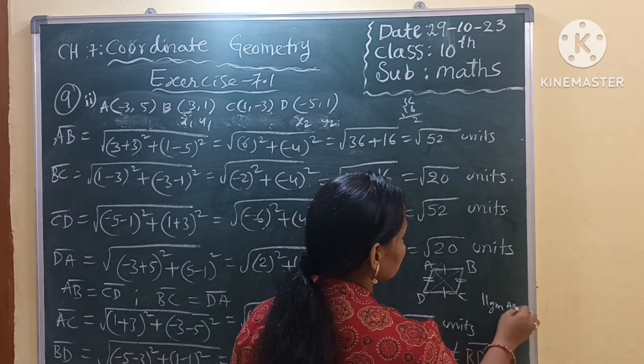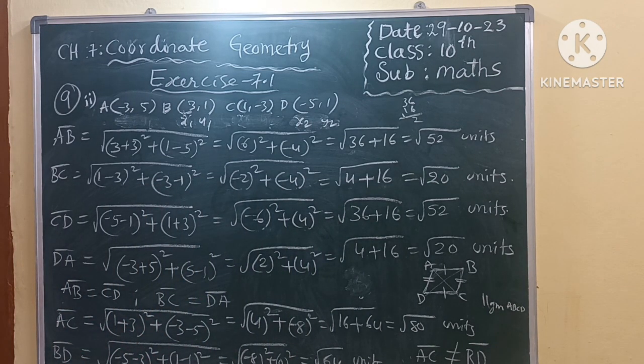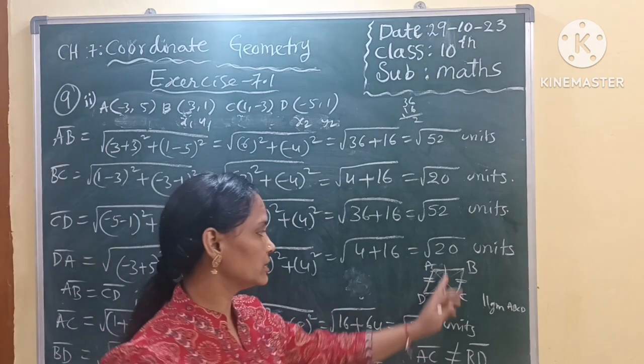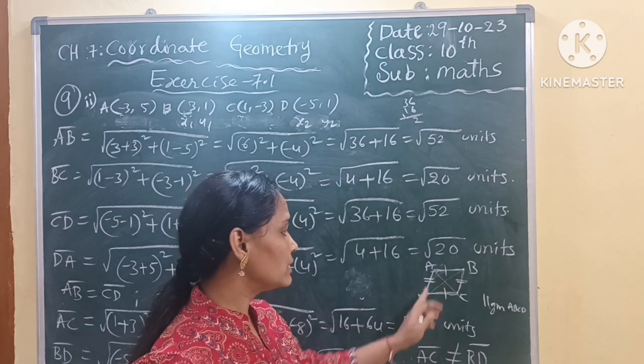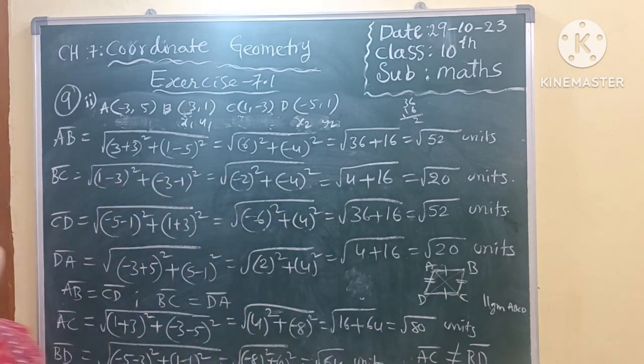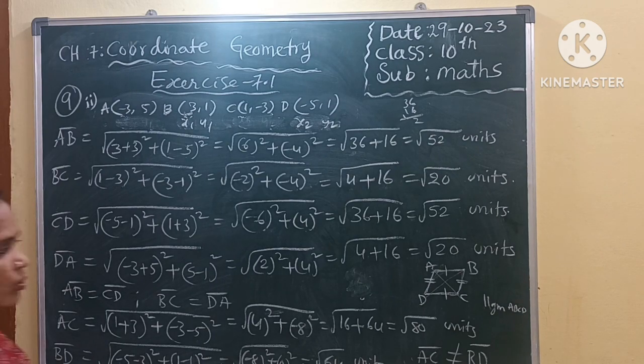So ABCD is a parallelogram. Why? Because we got the conditions now. So once take the screenshot. What is that condition? AB is equal to CD, BC is equal to DA, means opposite sides are equal in length, but diagonals are not equal. If that condition is there, that quadrilateral is called parallelogram.